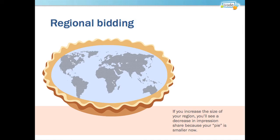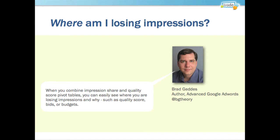If you increase or decrease the size of your region, you'll see that change. Some people were alarmed when this happened, so keep in mind that as you change the size of the pie, the size of the pie will change. What we can really understand is if we are losing impressions. Brad says when you combine Impression Share and Quality Score pivot tables, you can easily see where you're losing impressions and why.